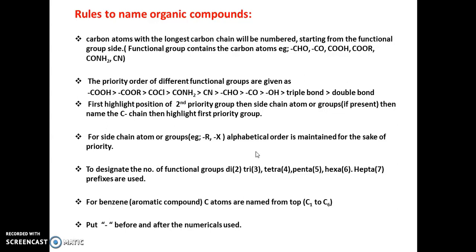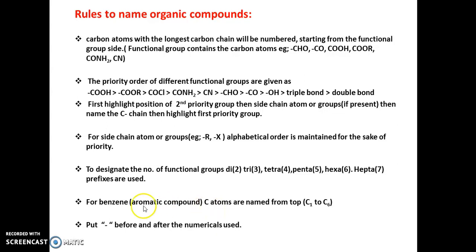The fifth point is to designate the number of functional groups. Suppose there are two methyl groups, two chlorine atoms, or two aldehyde groups present. The prefixes used are: di for two, tri for three, tetra for four, penta for five, hexa for six, and hepta for seven functional groups or side chain groups.